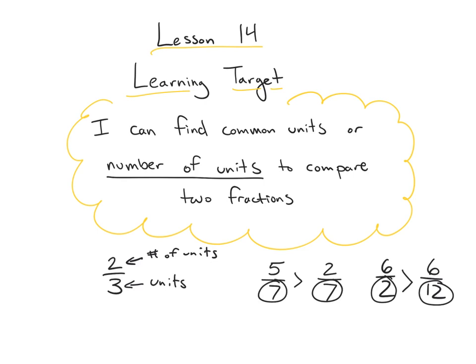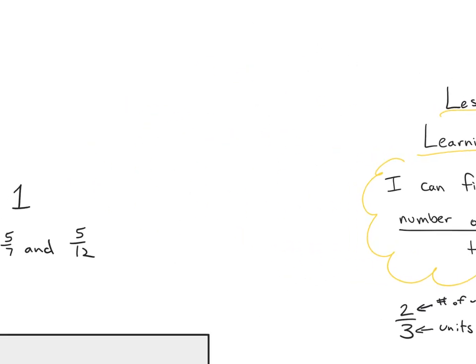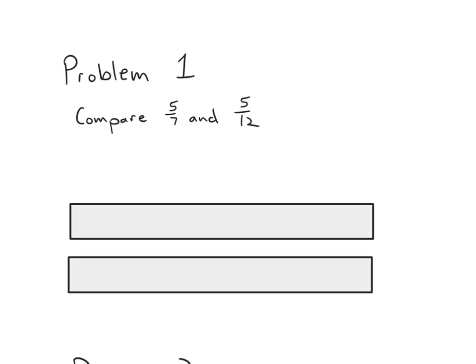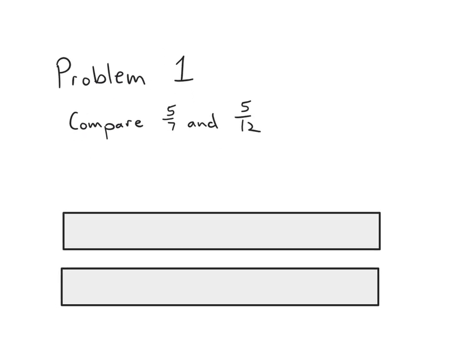This idea is going to be really helpful today to compare fractions in a quicker and easier way. Problem 1 asks us to compare five-sevenths and five-twelfths. Looking at these two fractions, we see that both have five as a numerator, meaning the number of units for both fractions is the same.